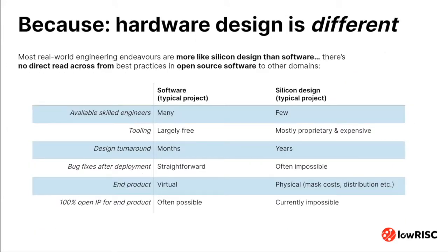That massive success has led many to emulate it by doing the same things — and that is the problem, because they're not the same. Software is an atypical case; it's a false friend as a design paradigm. In software, there are plenty of engineers, dev tools are largely free, design turnarounds are often only months, bugs can be fixed after deployment with a patch, and there's no physical thing — it's just bits in a cloud you can download.